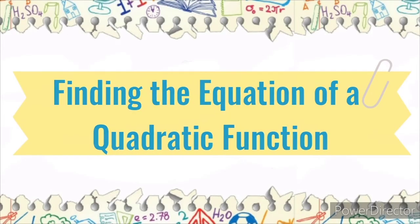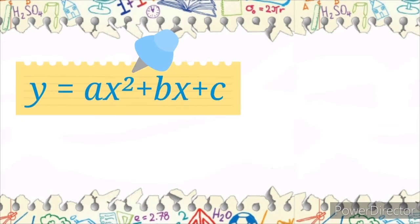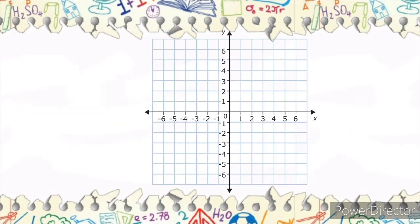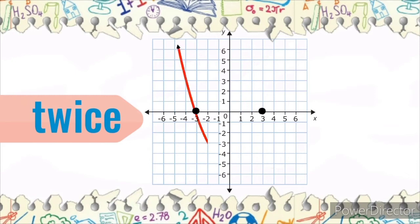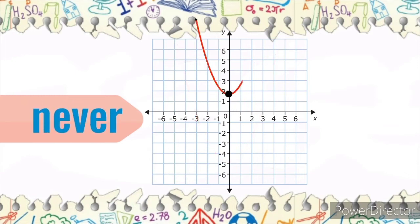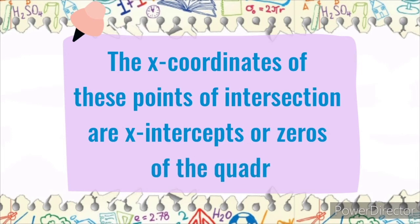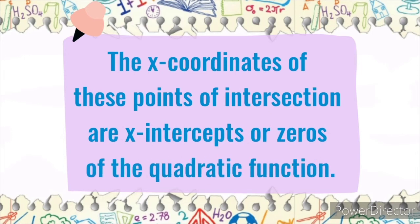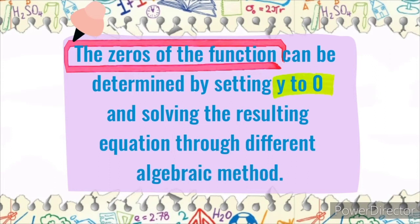Finding the equation of a quadratic function through zeros, graph, and table of values. The graph of a quadratic function y is equal to ax squared plus bx plus c is a parabola. A parabola can cross the x-axis once, twice, or never. The x-coordinates of these points of intersection are x-intercepts or zeros of the quadratic function. The zeros of the function can be determined by setting y to zero and solving the resulting equation through different algebraic methods.